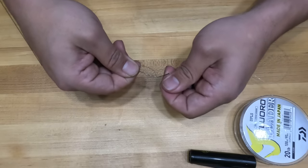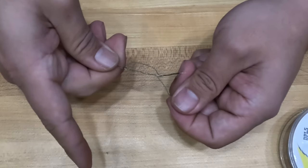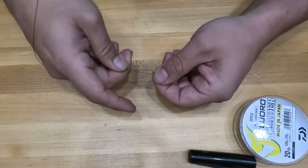Once you've finished, it should look something like this. Now be very careful to not pull that tag end because it will tighten those loops that you've created around the braid and fluoro.